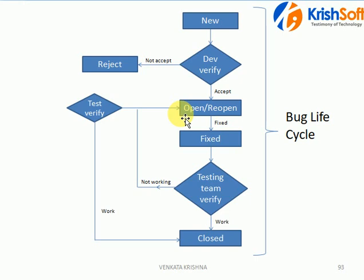To summarize the complete bug lifecycle: when you raise a bug the status is 'new'; the development team verifies it and either rejects it or changes it to 'open'; open bugs are worked on by developers and fixed; we then retest — if everything is working we close the bug, otherwise we reopen it and send it back to the development team. This is the complete bug lifecycle flow.